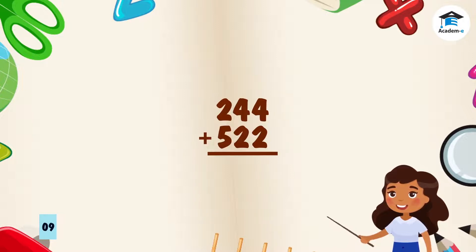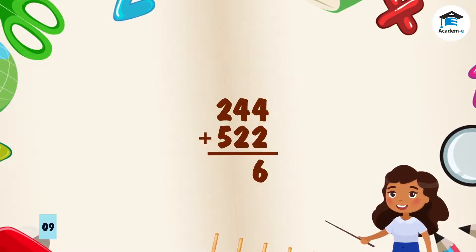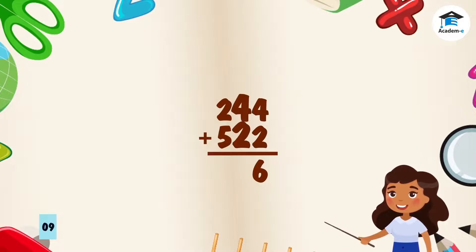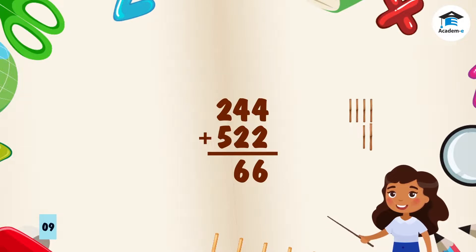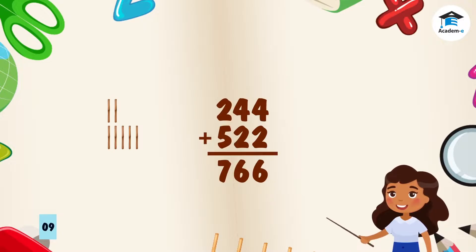Let's add 244 and 522. We start in the ones column: four plus two — we get six. Counting the sticks: one, two, three, four, five, six. Move on to the tens column: four plus two — we get six again. Then in the hundreds column: two plus five — we get seven. Counting the sticks: one, two, three, four, five, six, seven. The sum is 766.